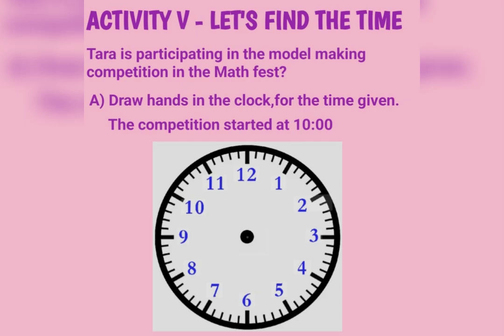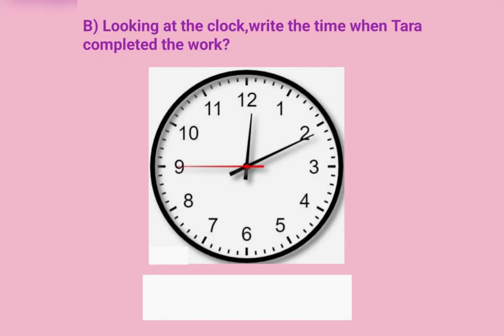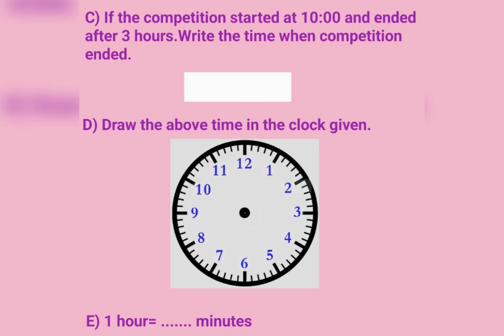Activity 5: Let's Find the Time. Tara is participating in the model-making competition in the math fest. A. Draw hands in the clock for the time given — the competition started at 10. B. Looking at the clock, write the time when Tara completed the work. C. If the competition started at 10 and ended after 3 hours, write the time when the competition ended. D. Draw that time in the clock. E. 1 hour is equal to how many minutes?